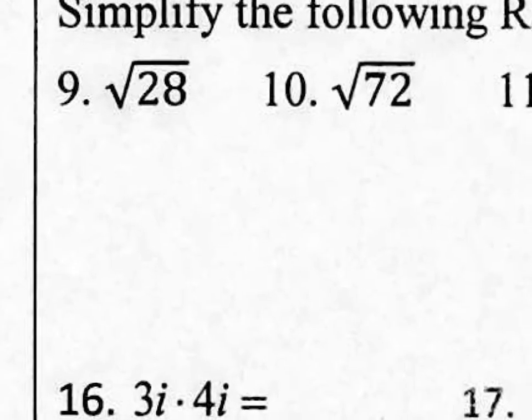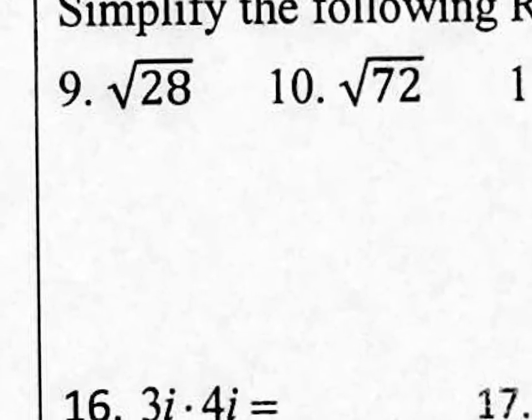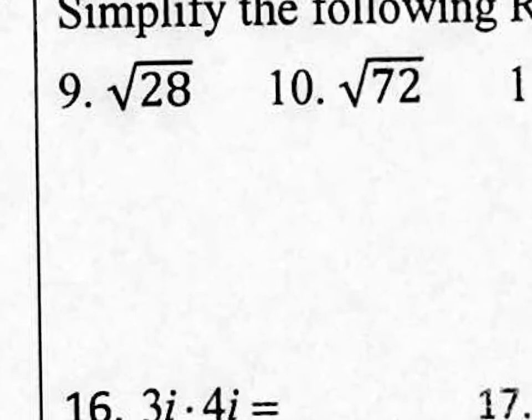How do we simplify a square root? You want a perfect square number in there. What is a perfect square number? 4, 9, 16, 25, 36. This number is definitely not a perfect square number. So the question is, could you rewrite it with multiplication to get a perfect square number?